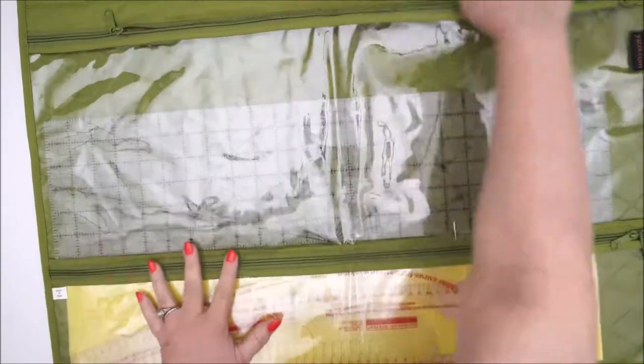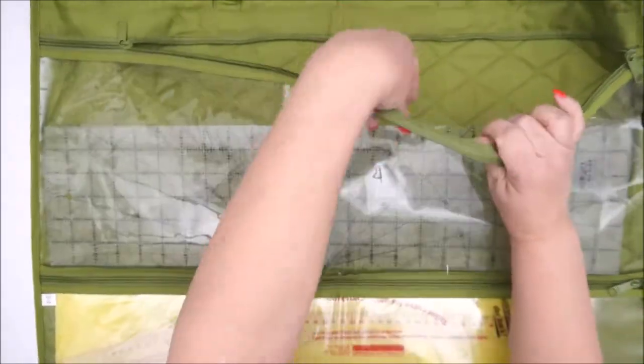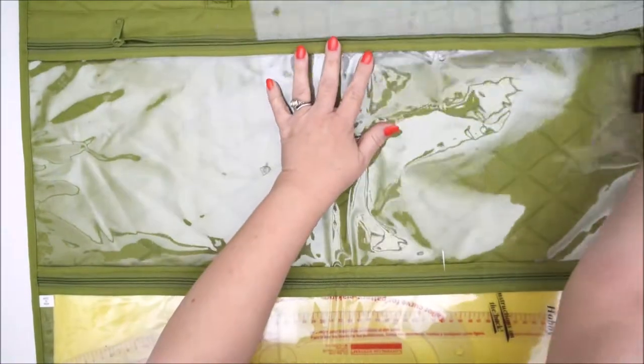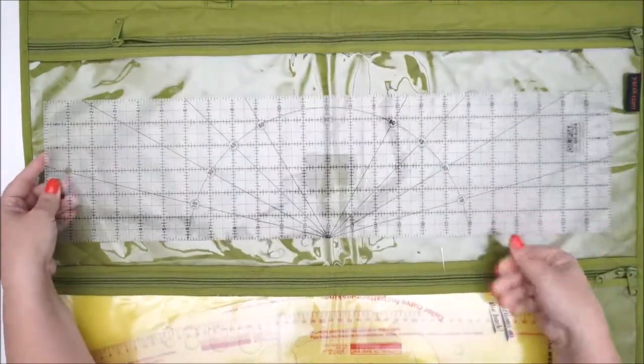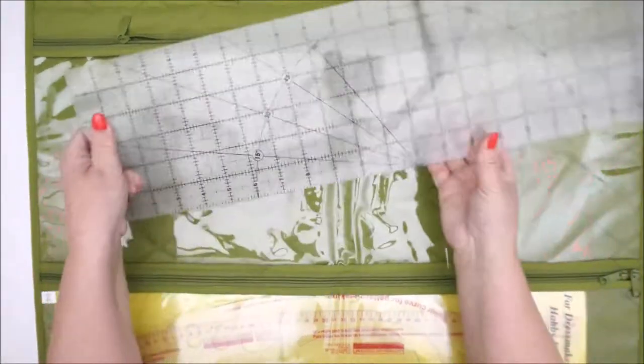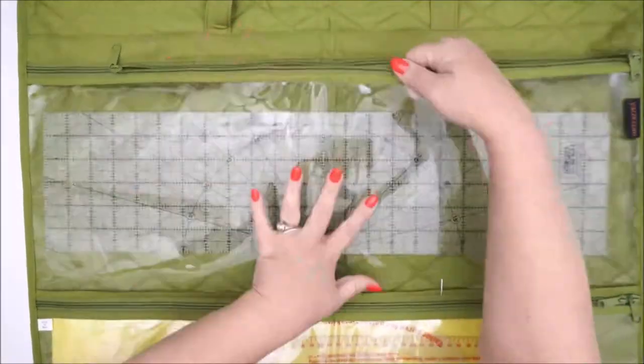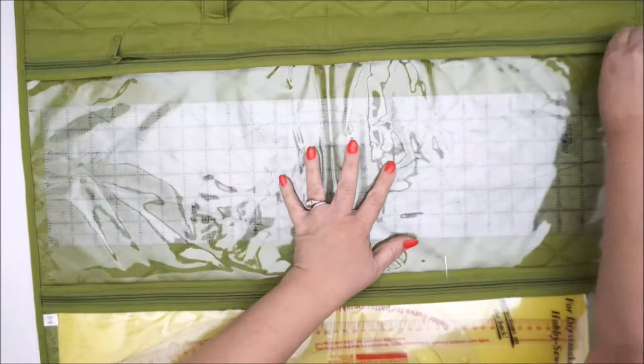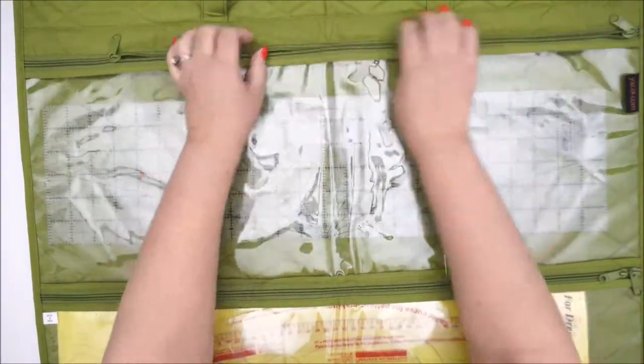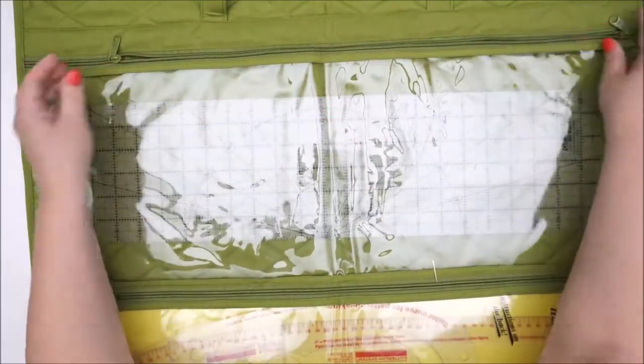designed to hold a large ruler and I've got the Olfa, I believe it's 6 inches by 24 inches, but I think I could even get a bigger one into this section. And what's nice is I could probably easily get multiple rulers into this section. The plastic is nice and thick, the zippers are constructed really well.